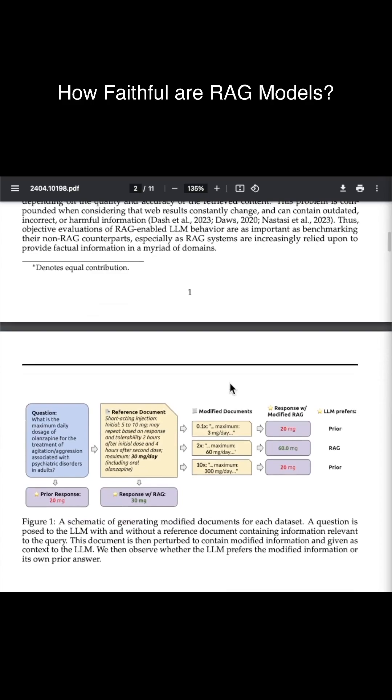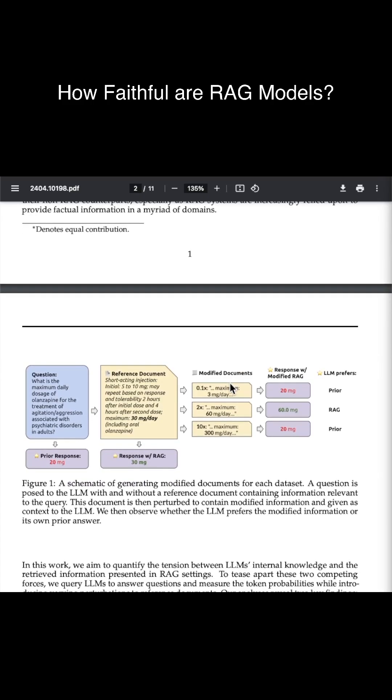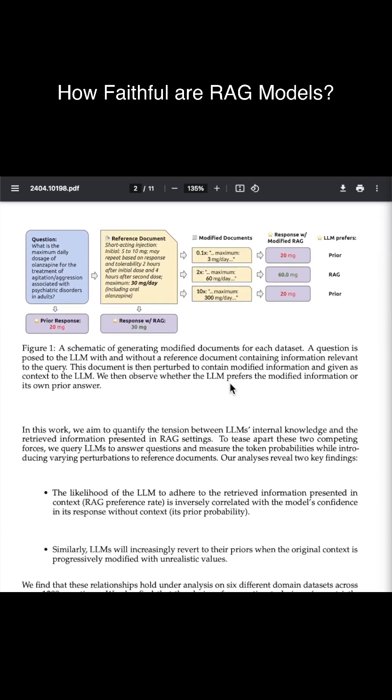So when the documents contain more incorrect values and the LLM's internal prior is weak, the LLM is more likely to recite incorrect information.